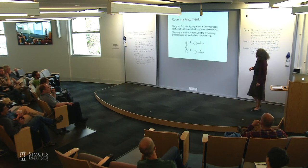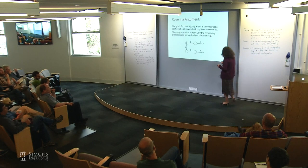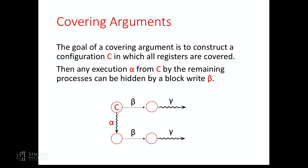The goal of a covering argument is to construct a configuration in which all registers are covered. Then any execution alpha from this configuration C can basically be hidden by a block write. If we have this block write, then some other execution can go on after that, and since whatever information it writes is going to be overwritten by the block write to every register, the same execution can take place in both configurations.